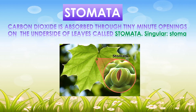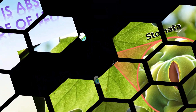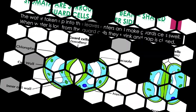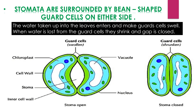Carbon dioxide is absorbed through tiny, minute openings on the underside of the leaves called stomata. Stomata are surrounded by bean-shaped guard cells on either side. When water enters the guard cells they swell open, and when water is lost from the guard cells they shrink and the gap is closed.